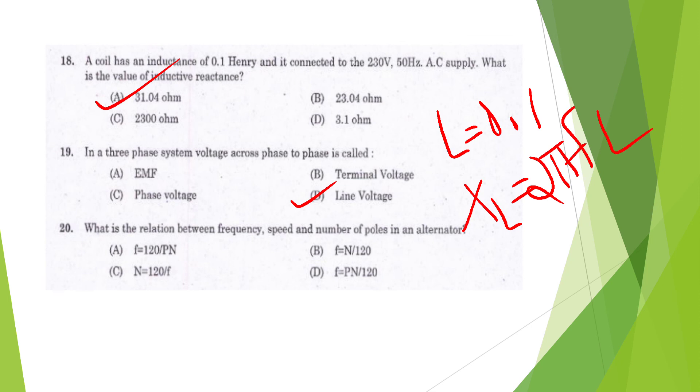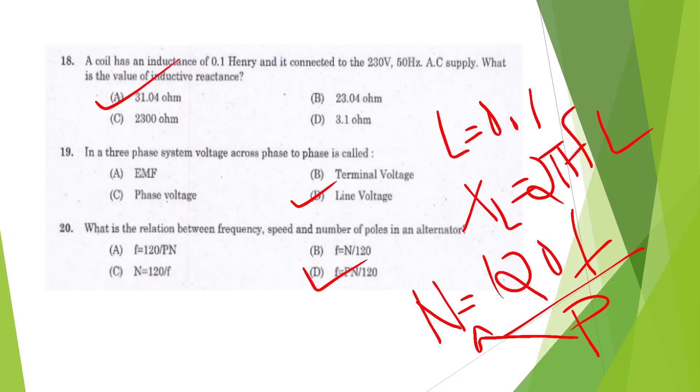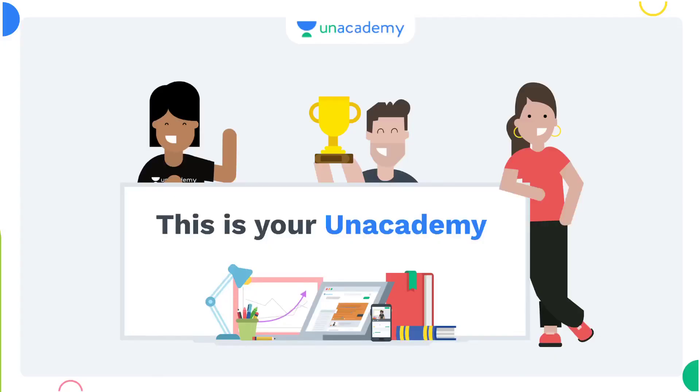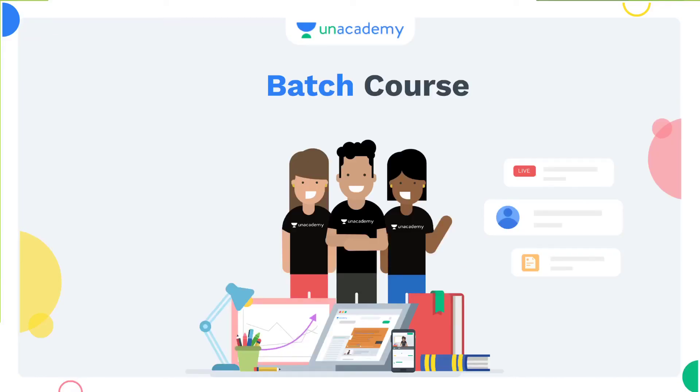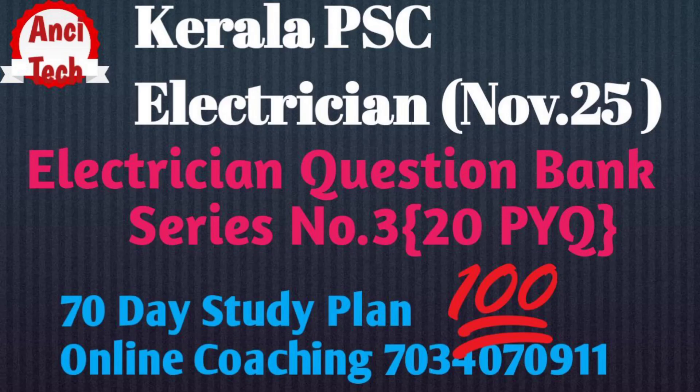Last question: What is the relation between frequency, speed, and number of poles in the alternator? F equal to NP by 120, F equal to N by 120, N equal to 120F by P, or N equal to 120F by P? Option D is the answer. So these are the questions from the previous question paper. You can find module 2 details in the description box. If you join the group, contact this number. Thank you.